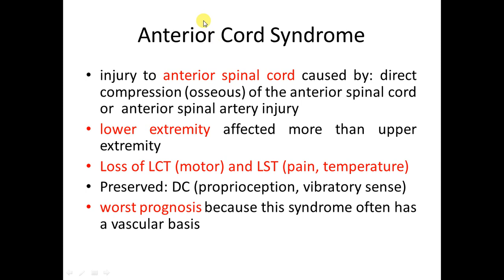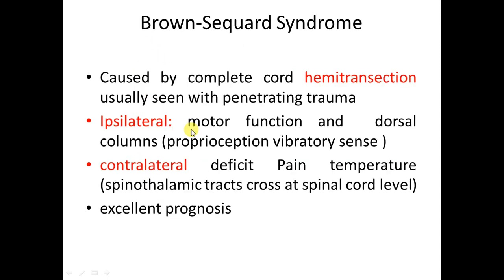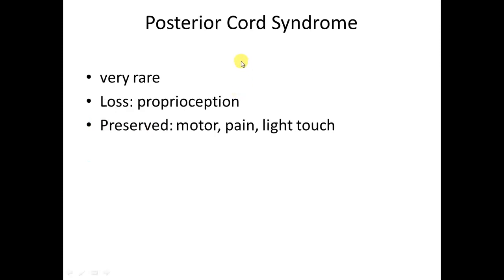Anterior cord syndrome has the worst prognosis. Anterior affection damages the corticospinal and spinothalamic tracts, causing loss of ipsilateral motor and sensory function. Brown-Séquard syndrome is a hemisection of the spinal cord causing ipsilateral motor loss and contralateral pain loss — it has the most excellent prognosis. Posterior cord syndrome involves affection of the posterior column causing loss of proprioception and is very rare.